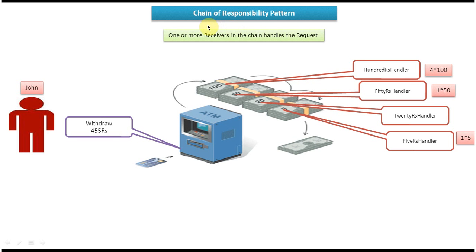In this tutorial we will see how we can use one or more receivers in the chain to handle requests. On the right side you can see a 100 Rupees handler, 50 Rupees handler, 20 Rupees handler, and 5 Rupees handler. The 100 Rupees handler is used to dispatch 100 Rupees notes and the 50 Rupees handler is used to dispatch 50 Rupees notes.